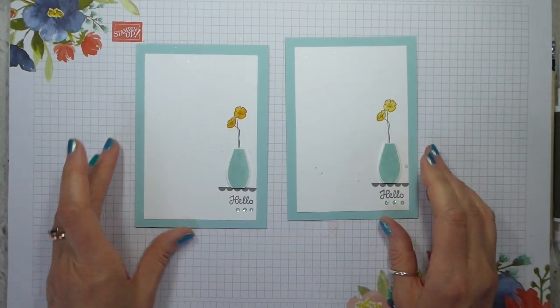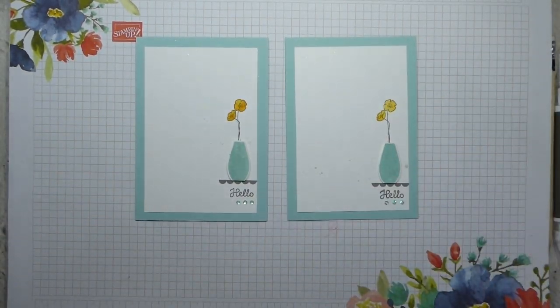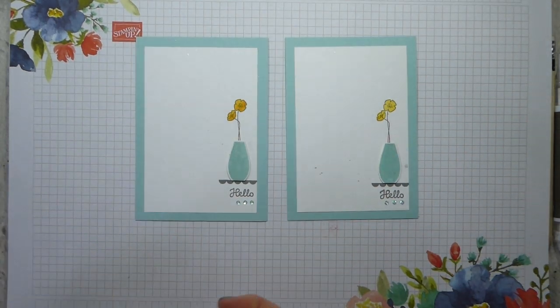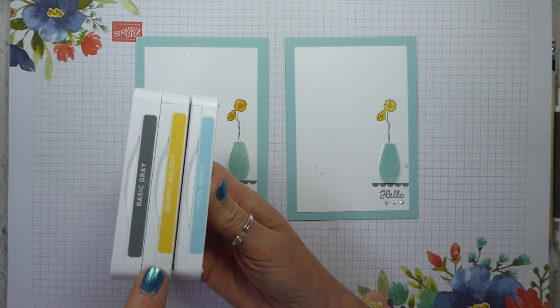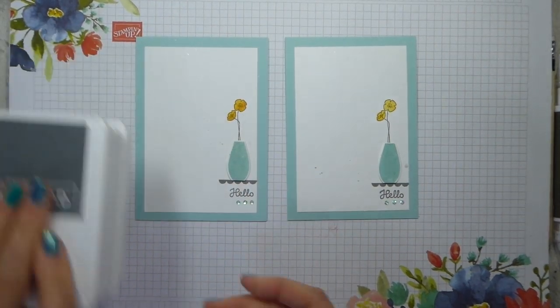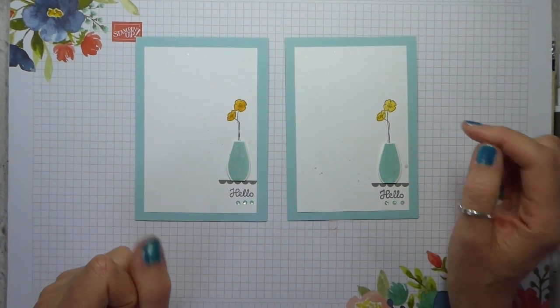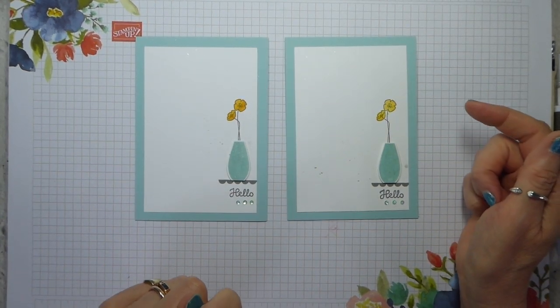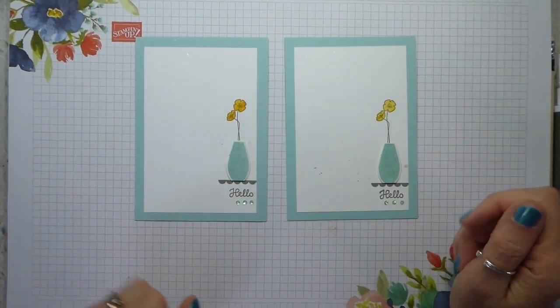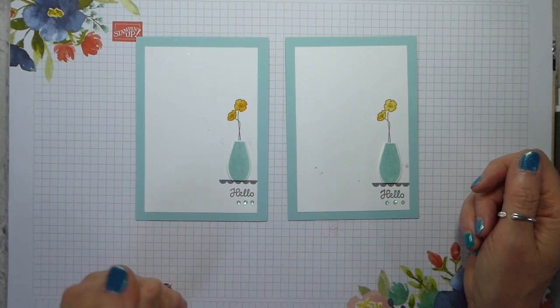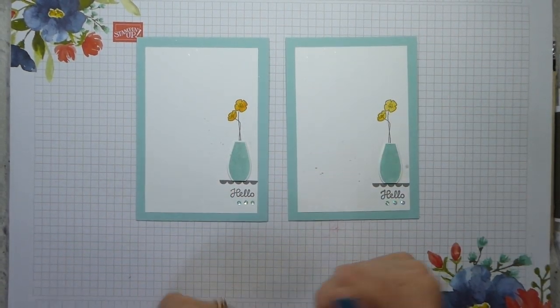So there we are, two really simple, really quick cards to make. You could rattle these off really quickly. So, as I say, we've got Pool Party, Mango Melody, Basic Grey. I hope you've enjoyed that. Do go and have a look at the other designs that we've got to inspire you. They truly are some amazing designs. I've gone for the quick, easy, simple option, just to show that there is the alternative of something a little quicker.